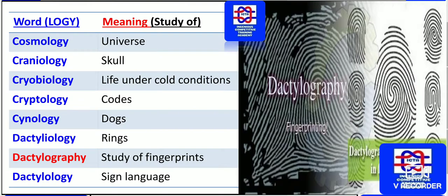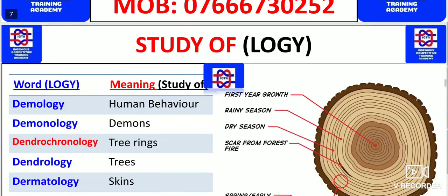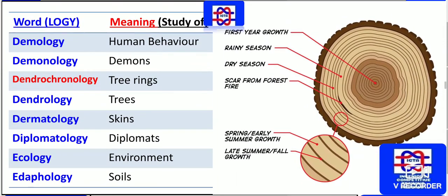Dactylography means the study of fingerprints — as you can see, it is used in the forensic department for identifying thieves or criminals. Dactylology also refers to sign language — the sign language used by those who can't speak.